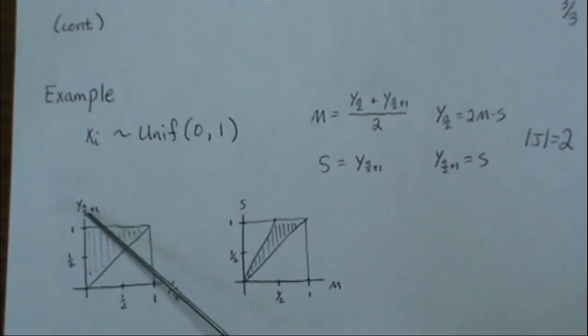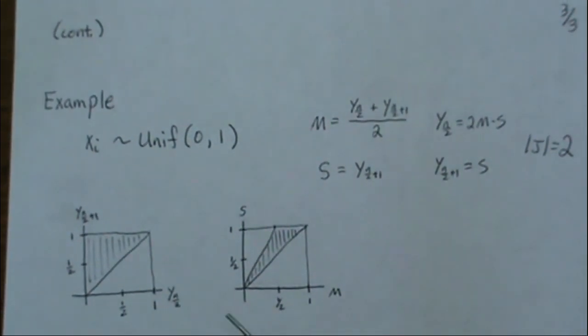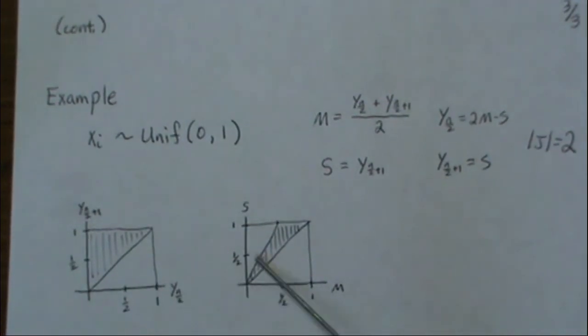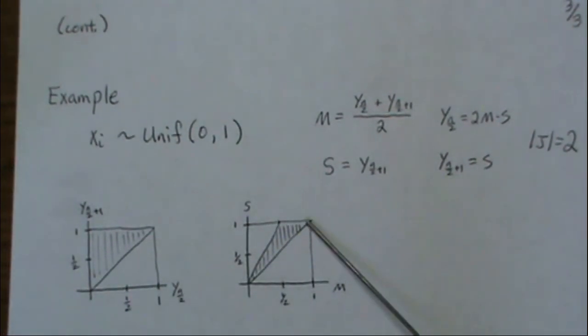So then when we map this to this, we're capped off at this, at one. So when we're integrating out S, we have to consider whether we're below one half or above one half, because the limits of integration are a little different.